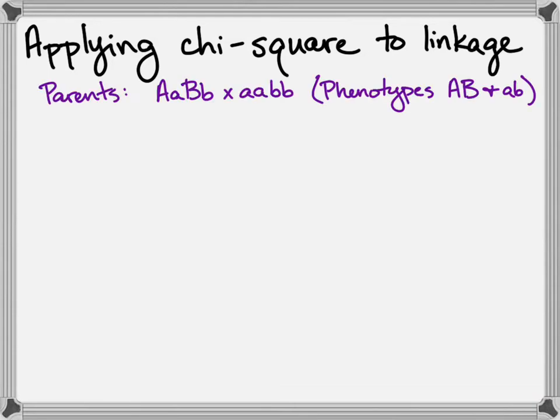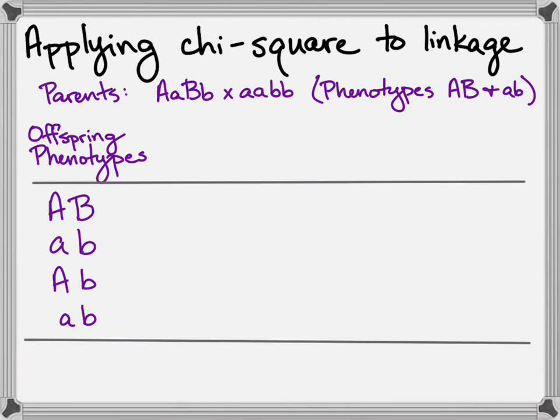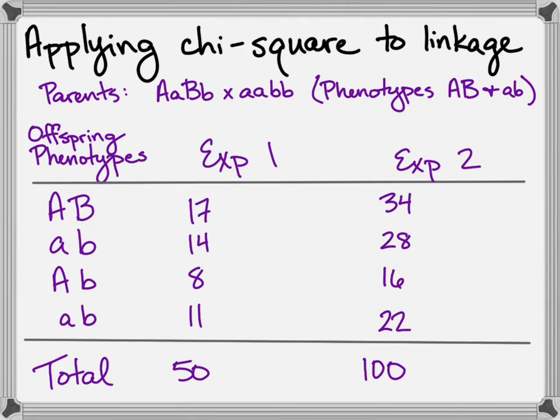Going back to our old example with these parents, I'm just going to abbreviate the phenotypes with the dominant or the recessive letters. So those are not genotypes, even though they look like the gamete genotypes. If you're looking at the offspring phenotypes, we have a couple of experiments here. Our total in the first experiment is 50. Our total in the second experiment is 100. But what we really care about in a linkage question is the parent phenotypes versus the recombinant phenotypes. I've organized my table so that the parent phenotypes are together and the recombinant phenotypes are together. Total those up and you're ready now to apply the chi-square.